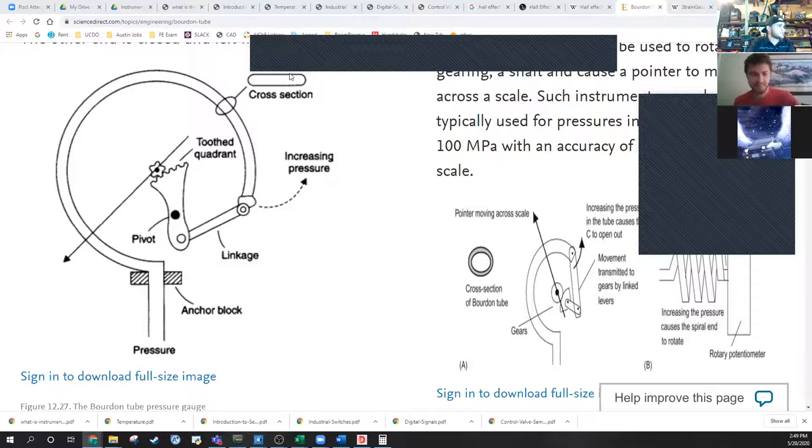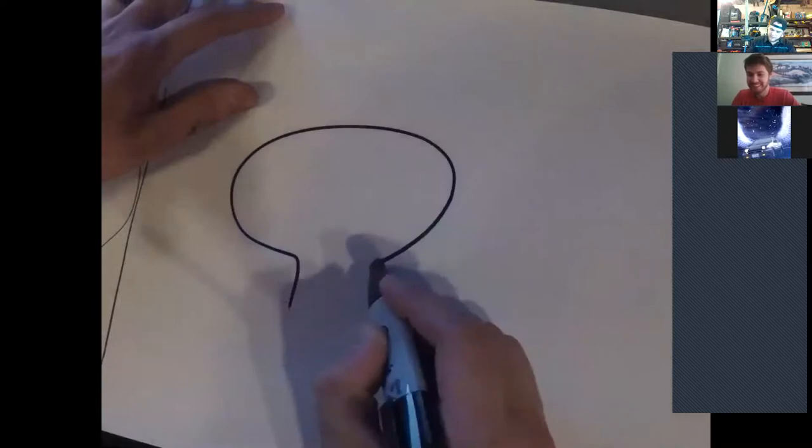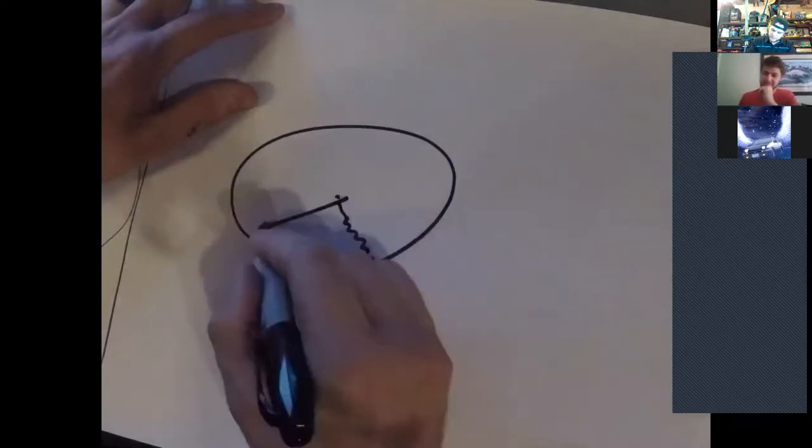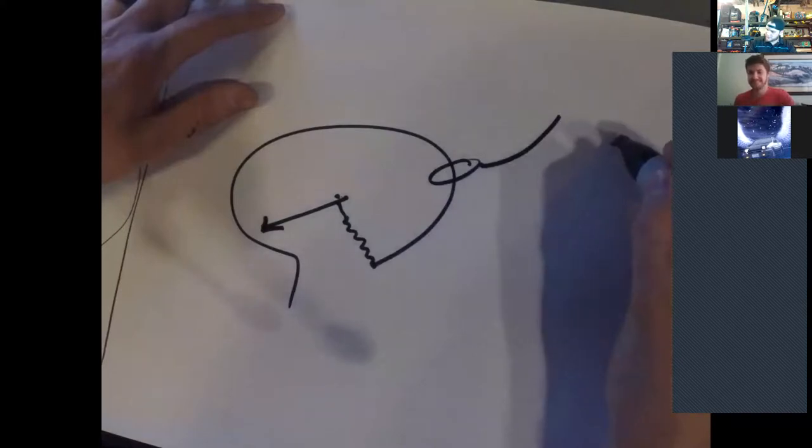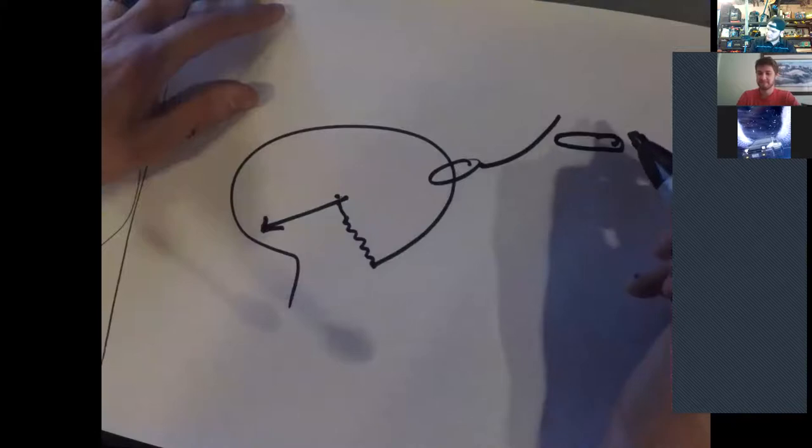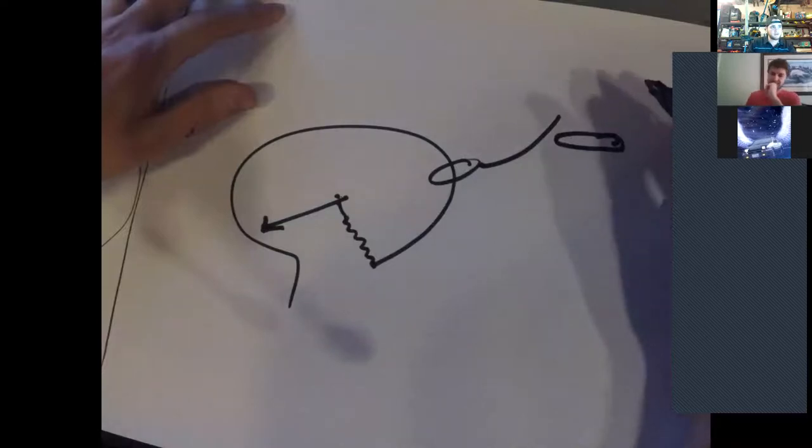So basically the way this works is you have a metal tube that has this gnarly cross-sectional geometry. And so as pressure increases in this tube, this tube wants to straighten out and pull basically pull up, which pulls on this linkage arm, which goes through the gears and pivots the needle.